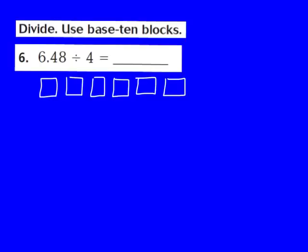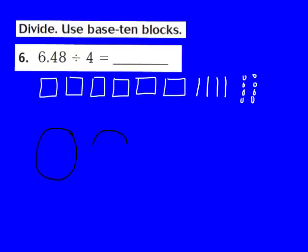I'm going to draw 1, 2, 3, 4, 5, 6 flats to represent the 6 in the ones place. Then I'm going to draw 4 longs to represent the 4 in the tenths place: 1, 2, 3, 4. Now I'm going to draw 8 unit pieces to represent the 8 in the hundredths place: 1, 2, 3, 4, 5, 6, 7, 8. So I now have 6 and 48 hundredths. Step 2 says draw circles to represent the divisor. Our divisor is 4, so I'm going to draw 4 circles: 1, 2, 3, 4.